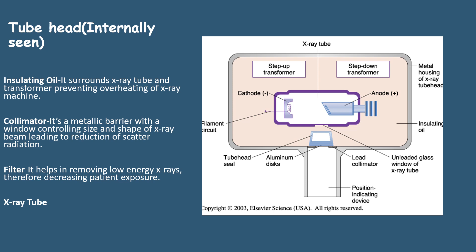The parts present internally in the tube head consist of insulating oil, collimator, filter, and x-ray tube. The insulating oil surrounds the x-ray tube and transformer and prevents overheating of the x-ray machine. The space is filled with the insulating oil.